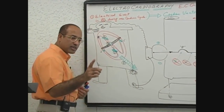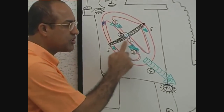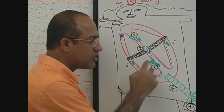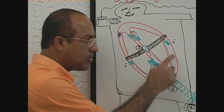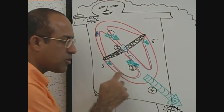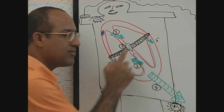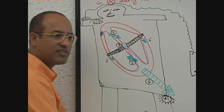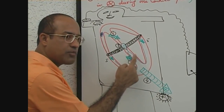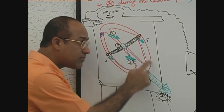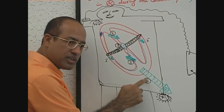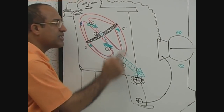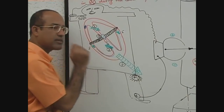Looking back at the diagram: during depolarization, the septum is depolarized first, then the major part, and lastly the basal part — because depolarization is a fast process. So first septal depolarization completes, then the vector for major ventricular depolarization is produced and very rapidly this vector completes, and then basal vectors are produced.